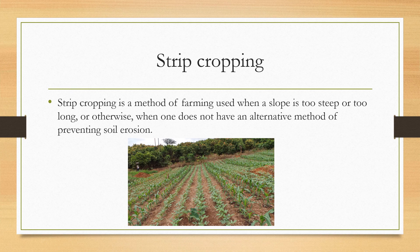Coming to the strip cropping system, you can observe in this image that it is a method of farming used on slopes or steep terrain, or when there is no alternative method of preventing soil erosion. The strip cropping pattern has been followed. These are some of the cropping patterns we have discussed in this video.